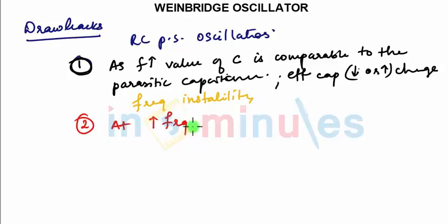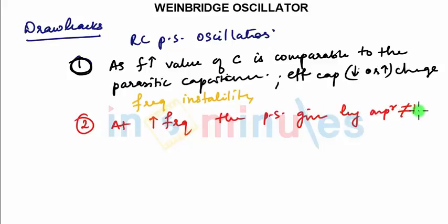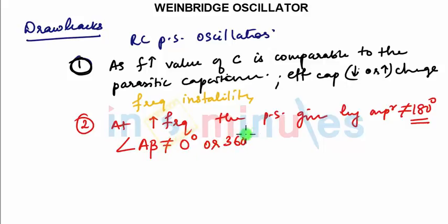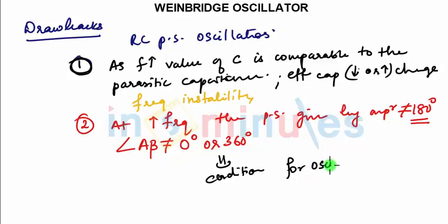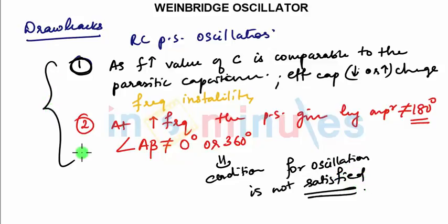This change in effective capacitance causes frequency instability. Second point: at high frequency, the phase shift given by the amplifier is not equal to 180°. The common emitter amplifier will not give a 180° phase shift, so the condition A·β angle ≠ 0° or 360°, meaning the condition for oscillation is not satisfied and sustained oscillations are not obtained.